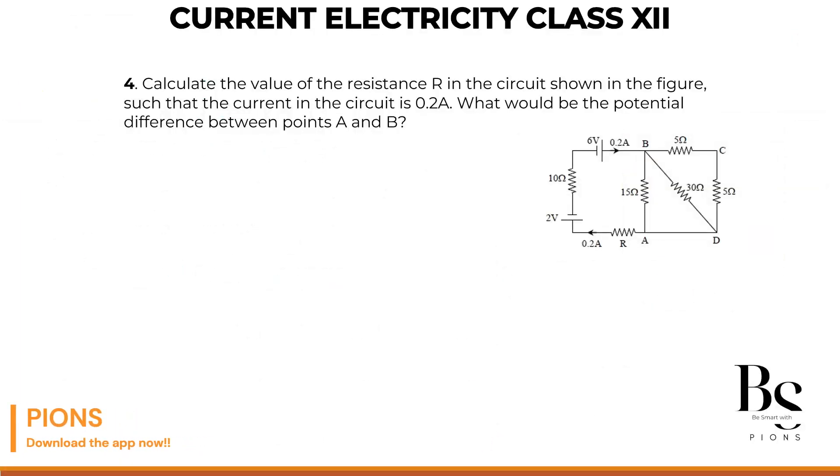Calculate the value of resistance R in the given circuit as shown in the figure. And such that the current in the circuit is 0.2 amps, what would be the potential difference between point A and B? So along with the resistance R, you have to find the voltage across AB.